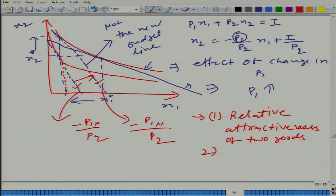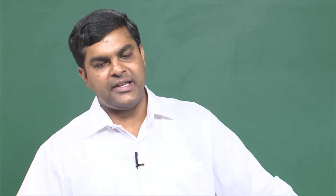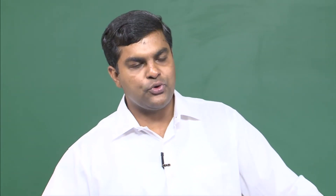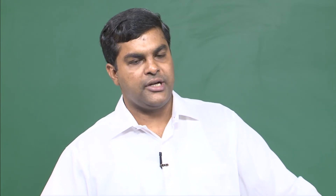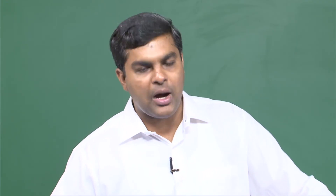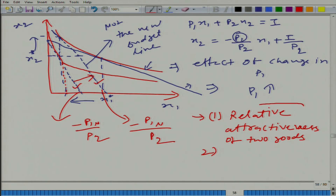How is it decreasing purchasing power? Let us say good one is food and good two is cloth. Let us say food is 10 rupees per kg and income is 100 rupees, so income expressed in food is 10 units. But now the price of food goes up from 10 to 20 rupees. His income is now only 5 units of food — there is a decrease in his purchasing power. So a change in price does two things: it changes the relative attractiveness of goods, and it changes the purchasing power.